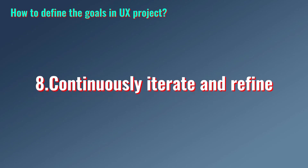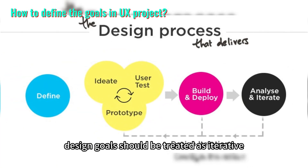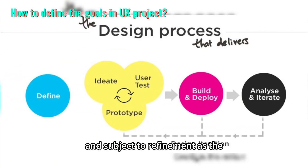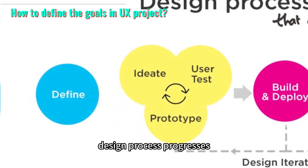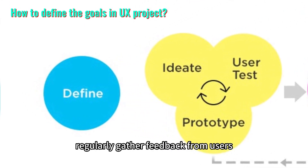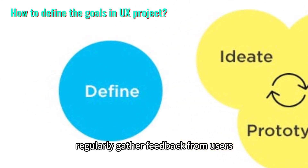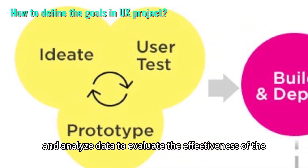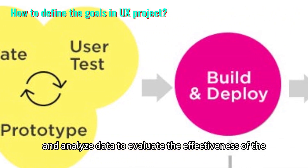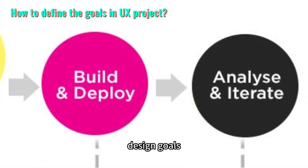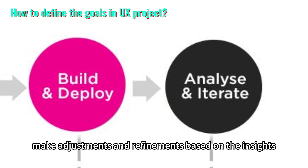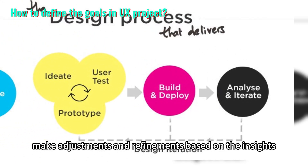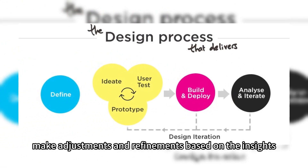Step eight: continuously iterate and refine. Design goals should be treated as iterative and subject to refinement as the design process progresses. Regularly gather feedback from users, conduct usability testing, and analyze data to evaluate the effectiveness of the design goals. Make adjustments and refinements based on the insights gained.